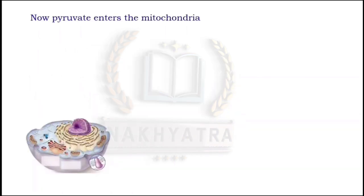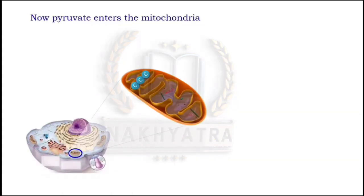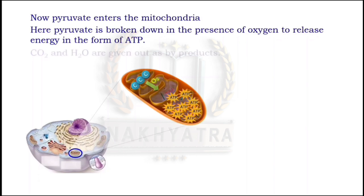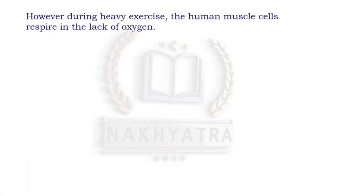Now this pyruvate enters the mitochondria, where it is broken down in the presence of oxygen to release energy in the form of ATP. The byproducts here are carbon dioxide and water, which are given out as byproducts.